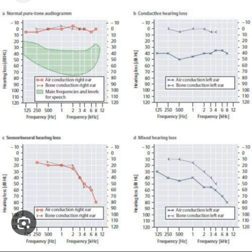This activity reviews the interpretation of audiograms and their role in identifying patterns of otologic disease. Objectives include: reviewing the concept of pure tone thresholds and how they are measured during audiometry; identifying air conduction and bone conduction notation on the audiogram and understanding masking; summarizing differences between sensorineural and conductive hearing loss; and identifying common patterns of abnormal hearing and associating them with clinical diagnoses.